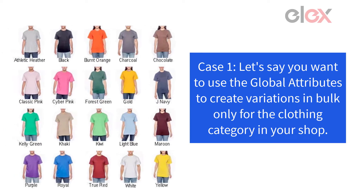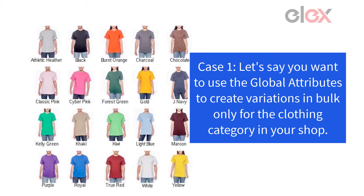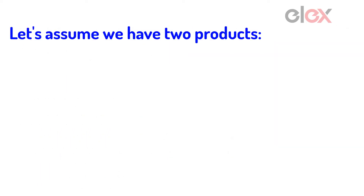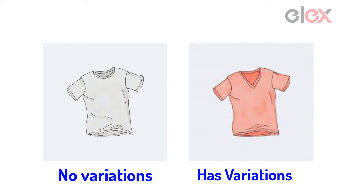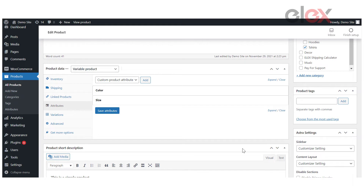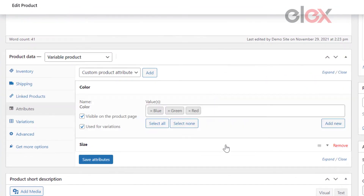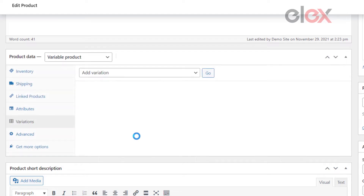Case 1. Let's say you want to use the global attributes to create variations in bulk only for the clothing category in your shop. Let's assume we have two products: t-shirt and v-neck t-shirt. The t-shirt does not have any variations, whereas v-neck t-shirt does. T-shirt, our first variable product, has global attributes of color and size, but no variations. We will use the plugin to create variations for this product.